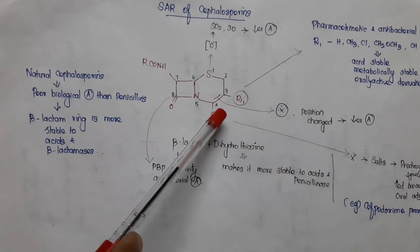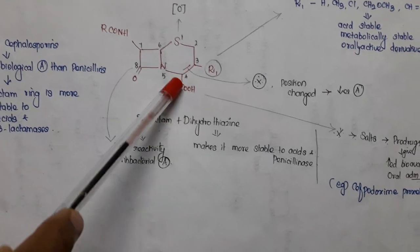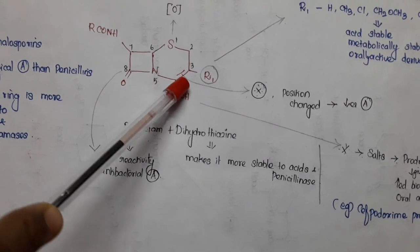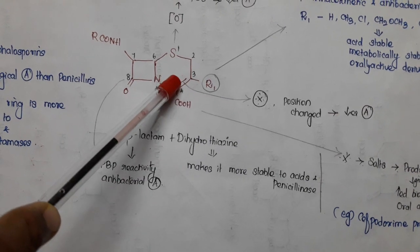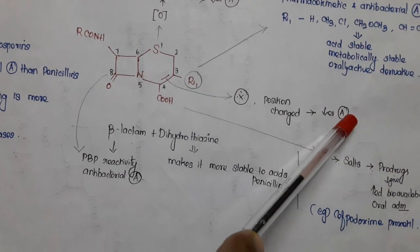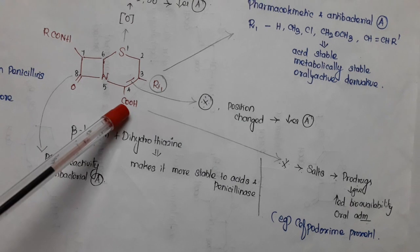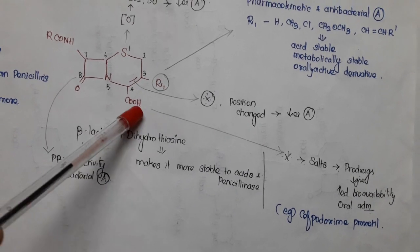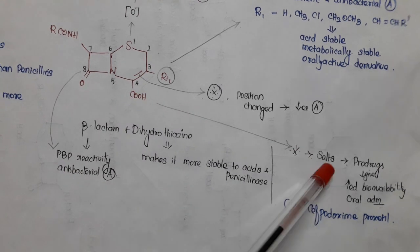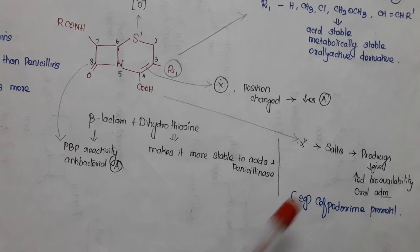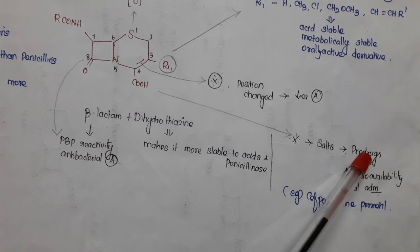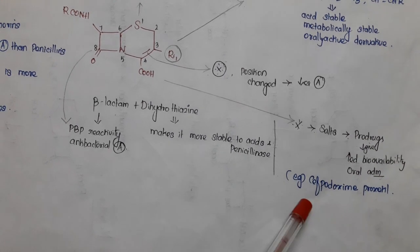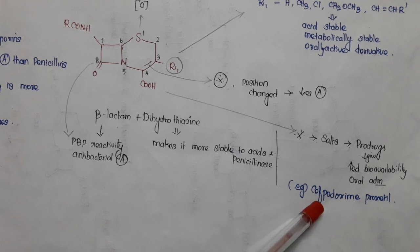The cephalosporin has a double bond between positions three and four, and this is important for activity — that position must not be changed. If the position of the double bond is changed, the activity would be reduced. In the fourth portion, there should be a carboxylic acid group, which is important for activity because it can be converted into a salt and used as a prodrug. Prodrugs have increased oral bioavailability. An example is cefpodoxime proxetil.